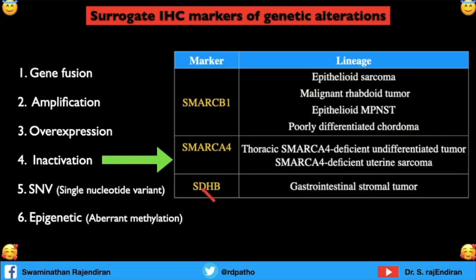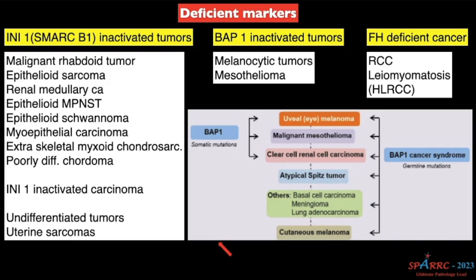Coming to inactivation markers — there are three to remember. SDHB (succinyl dehydrogenase B) is relevant in pheochromocytoma and GIST. SMARCB1 (also known as INI1) and SMARCA4 are the others. These are called deficient markers because they will be lost upon inactivation. Science is improving so fast — previously the knowledge doubling time was one year, now it may be one day. There is a large list of INI1/SMARCB1-inactivated tumors.